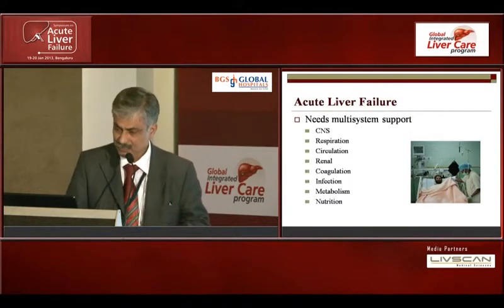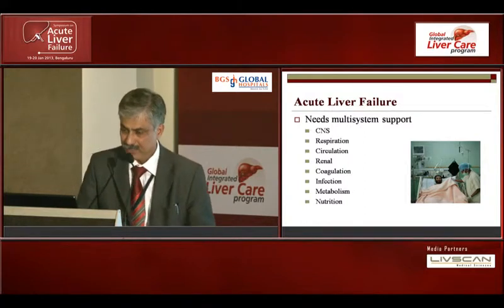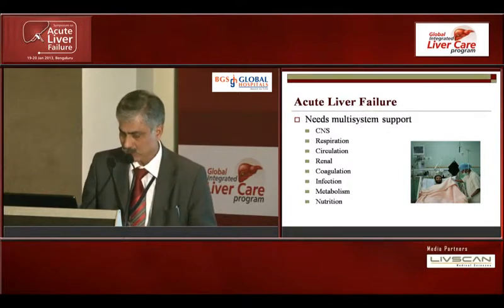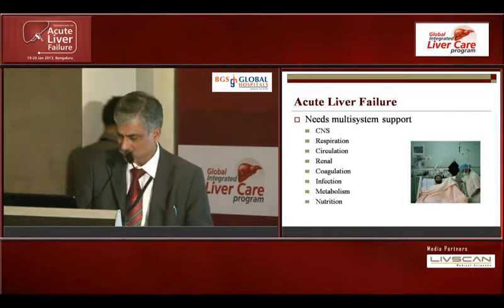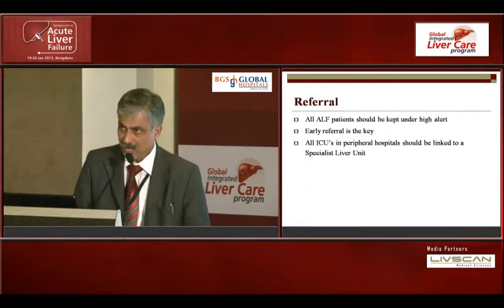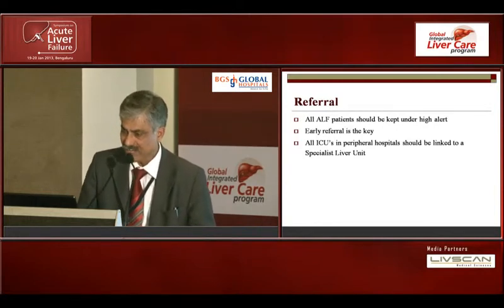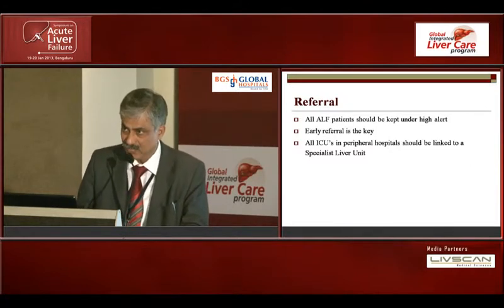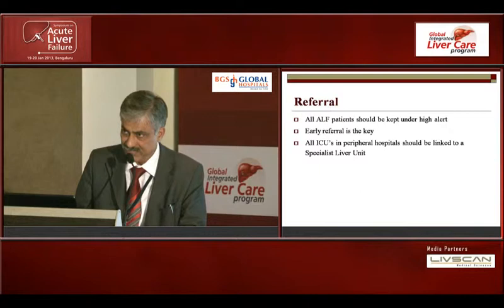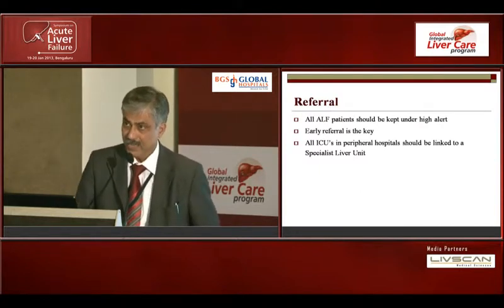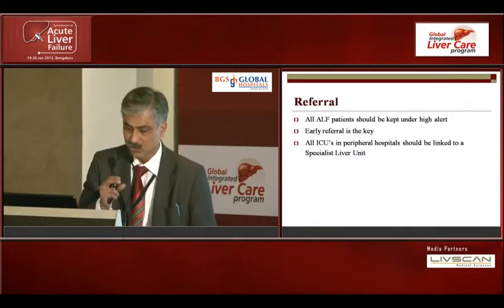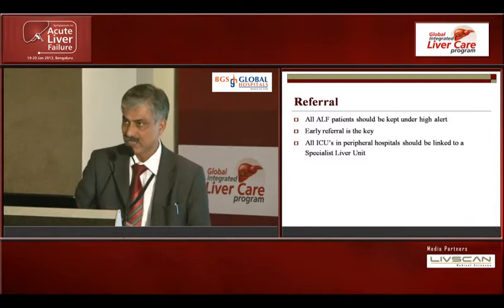ALF is a multisystem problem involving almost every organ — CNS, respiratory, circulatory, renal, severe coagulation problems, and infections. All ALF patients should be kept under high alert. The moment you make a diagnosis of acute liver failure, it is a matter of great urgency and this should be conveyed to the treating team, nursing staff, and the family. Early referral is key — identify patients who are going to be sicker and unlikely to do well at the same center.